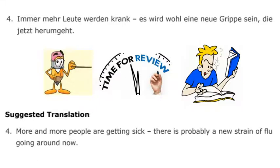But then we have werden allowing us not to talk about the future, as it might first appear. Es wird wohl eine neue Grippe sein, die jetzt herumgeht — it might look like this is 'will,' as in 'there will be a new strain of flu going around.' No — this is a hypothesis without full certainty about events observed at the present moment. In English this would be a probability statement: 'there probably is such and such.' In German, we form that by using werden in conjunction with wohl, which in some contexts means 'probably.'